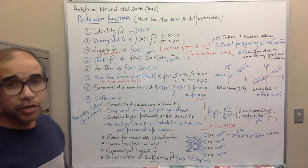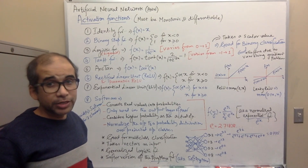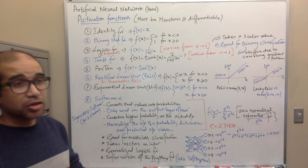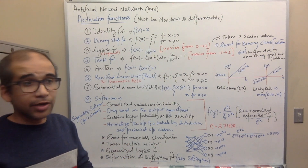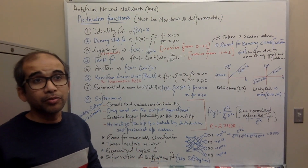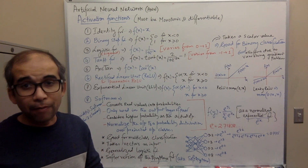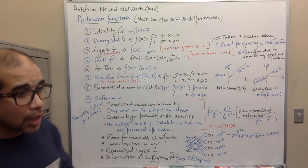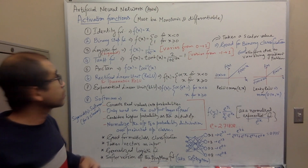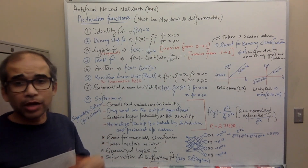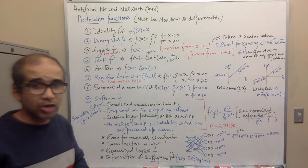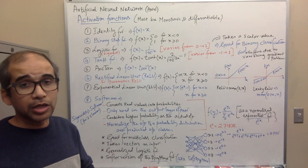Activation functions are very important in artificial neural networks. They change the linear nature of computations into a non-linear nature, so that the output of the neural network can approximate any complex mapping between the input and the output. We have already seen the sigmoid activation function, but there are many other types. The objective of this lecture is to introduce you to their names and structures.